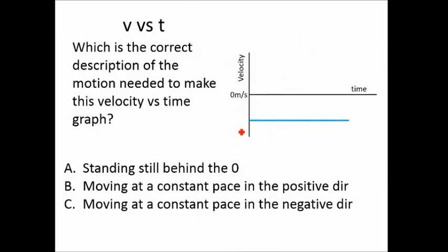All right, so now what's going on here? Here's our velocity, and it doesn't change. So if the velocity doesn't change, you are moving at a constant speed. If you're not at zero, you're at a constant pace, and are you going positive or negative?